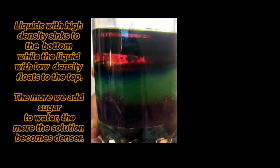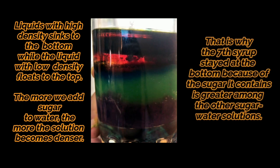Liquids with high density sink to the bottom, while the liquid with the lowest density floats to the top. The more we add sugar to water, the more the solution becomes denser. That is why the syrup with the most sugar stayed at the bottom, because the sugar it contains is greater than the other sugar-water solutions. I hope you have learned something in this video. That's all. Thank you.